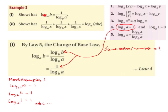Show that log base a of b is equal to 1 divided by log base b of a. Part 2: show that 1 divided by log base a of x, plus 1 divided by log base b of x, plus 1 divided by log base c of x, is equal to log base x of abc.